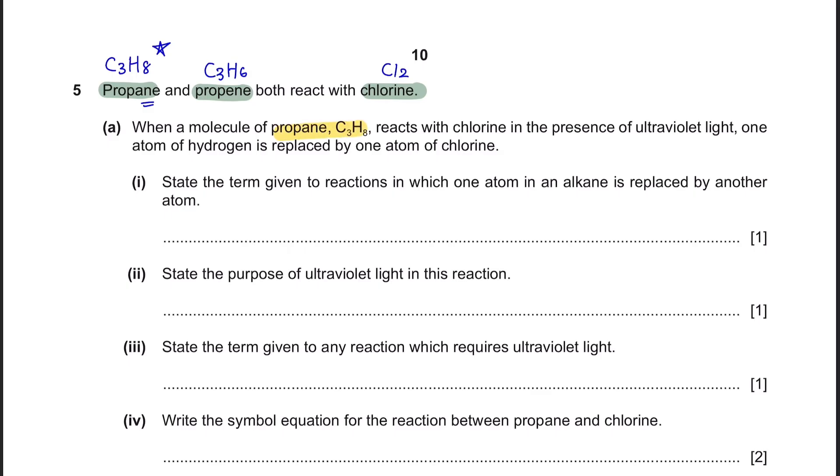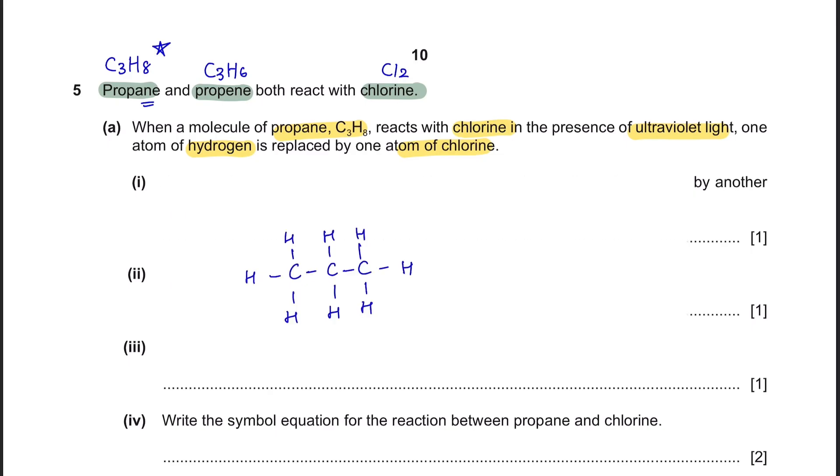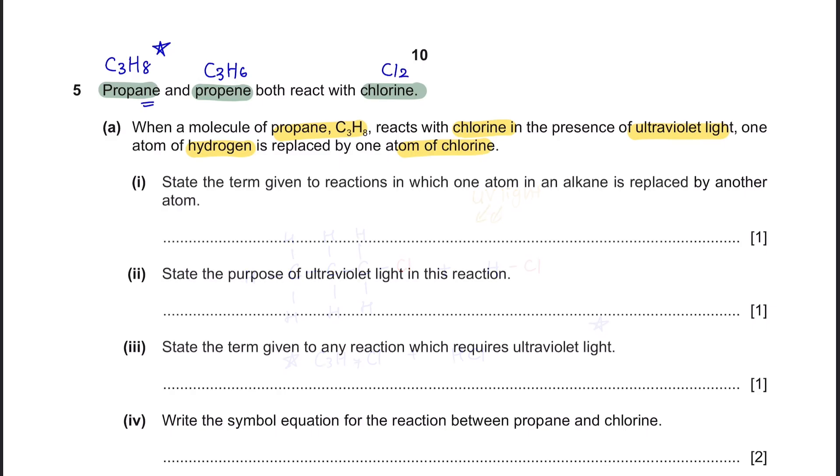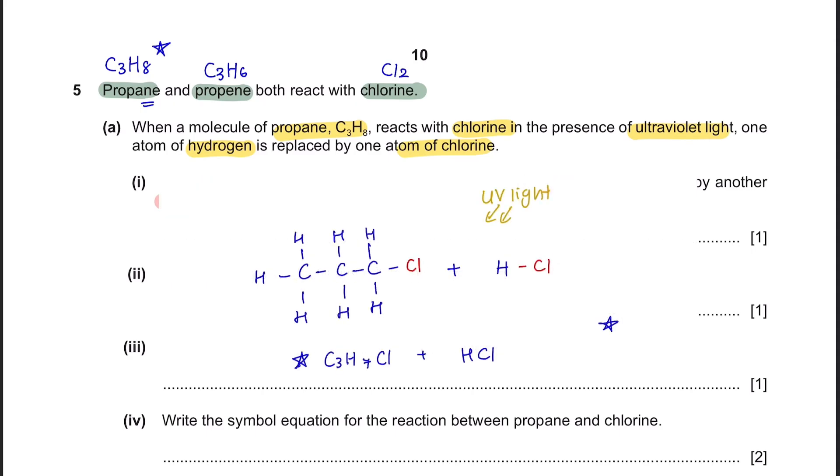Question A: When a molecule of propane C3H8 reacts with chlorine in the presence of ultraviolet light, one atom of hydrogen is replaced by one atom of chlorine. So what is happening here is that propane reacts with chlorine in the presence of ultraviolet light, and one atom of hydrogen is replaced by one atom of chlorine. Your product now is chloropropane and HCl. Part 1: State the term given to reactions in which one atom in alkane is replaced by another atom. This process is called substitution.